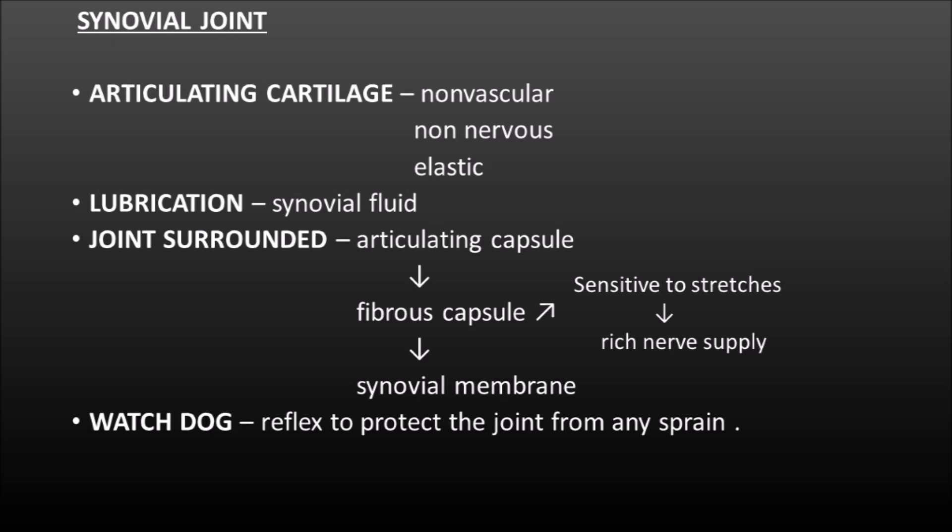Before discussing the bifurcations under synovial joint, let us brush through its most important features. The articulating cartilage is non-vascular and elastic. It is lubricated by synovial fluid, and the joint is surrounded by an articular capsule made up of a fibrous capsule lined by synovial membrane. This fibrous capsule is sensitive to stretch because of its rich nerve supply. The synovial joint acts as a watchdog, setting up an appropriate reflex to protect the joint from any sprain.